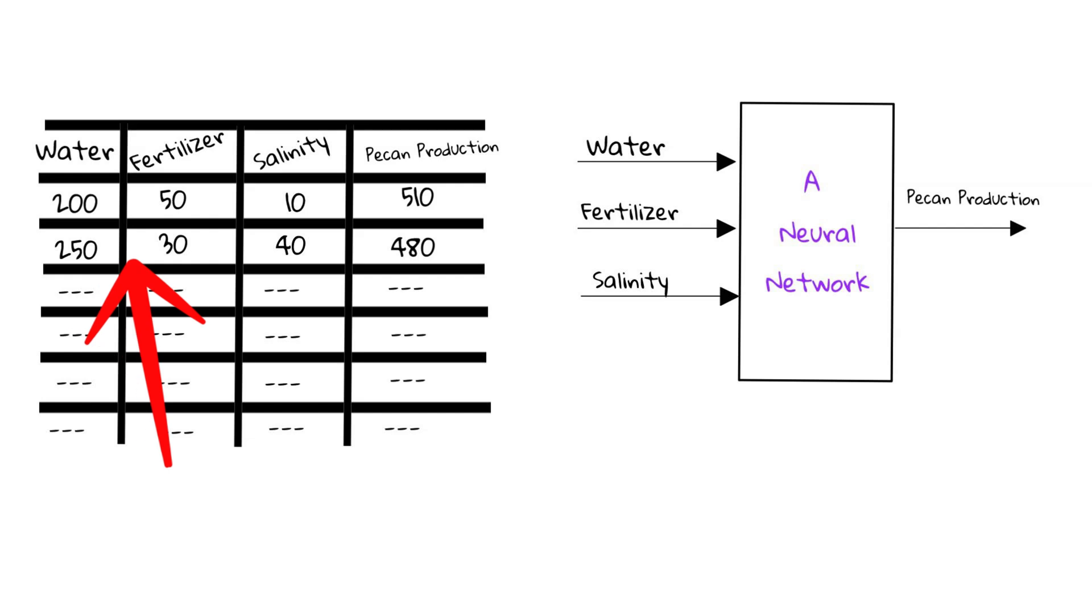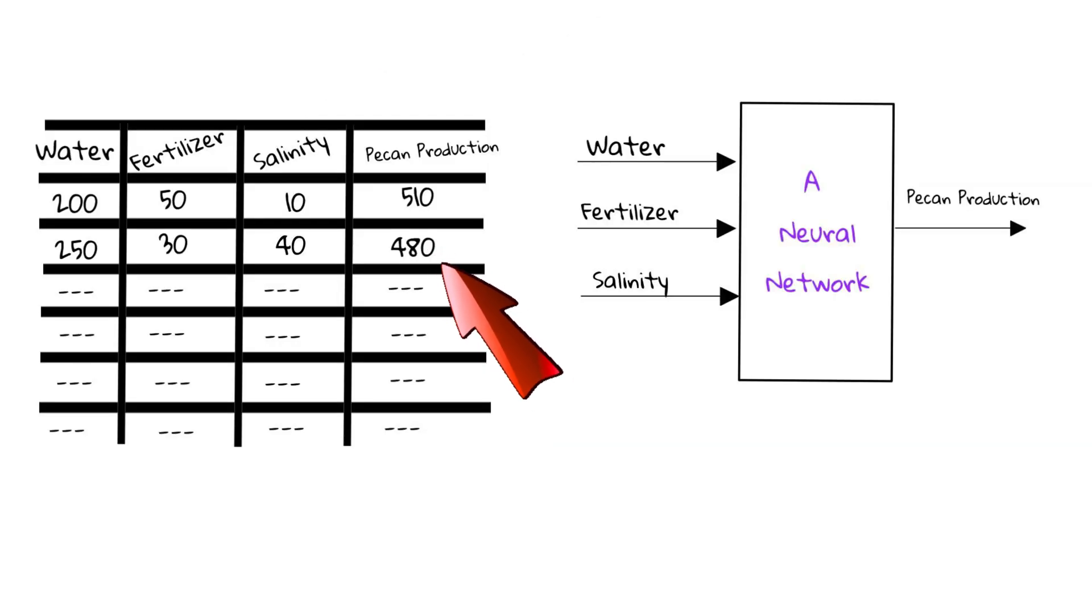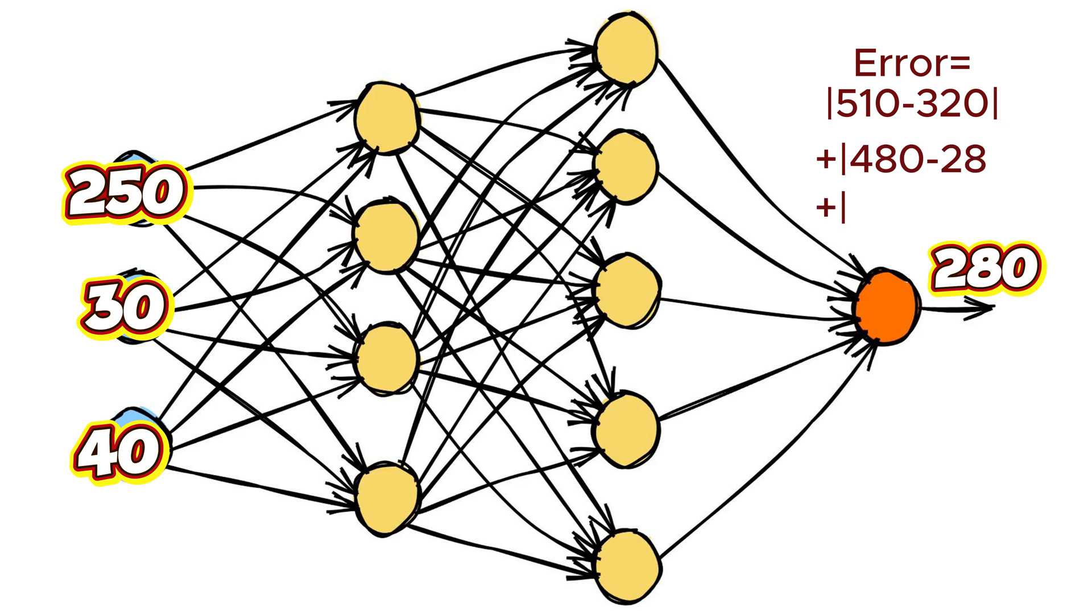For each set of input vector of water, salinity, and fertilizer, the error is calculated between computed pecan production and actual pecan production. All the errors are then summed up.